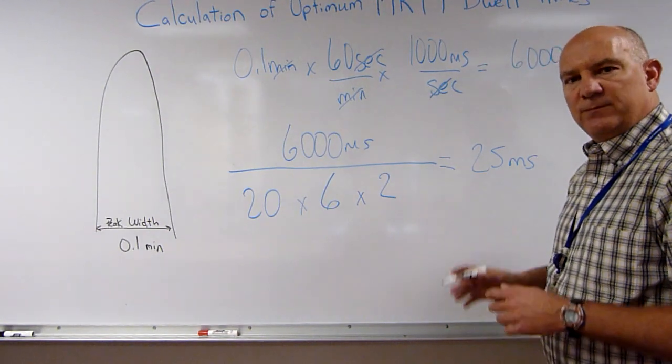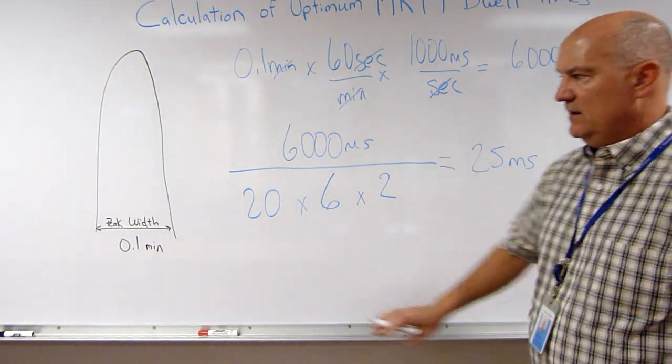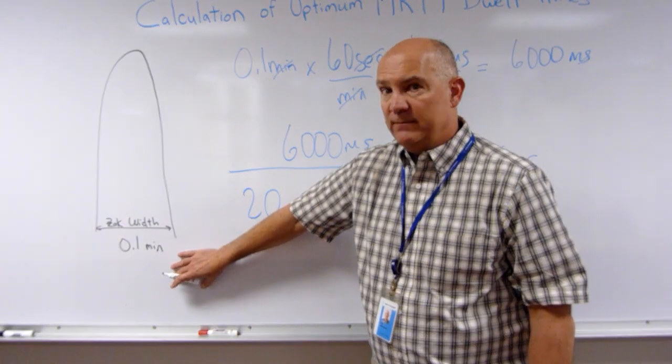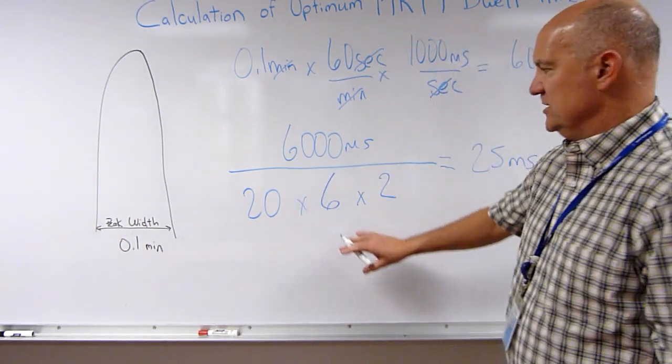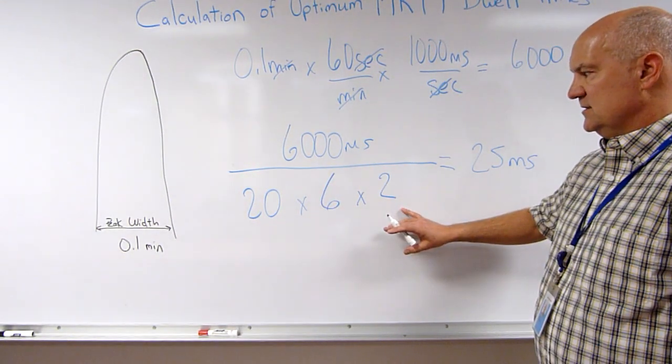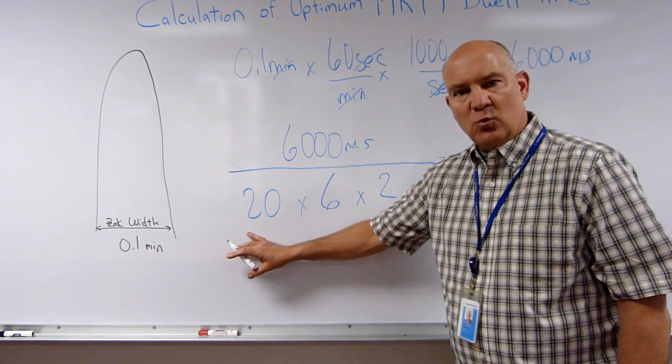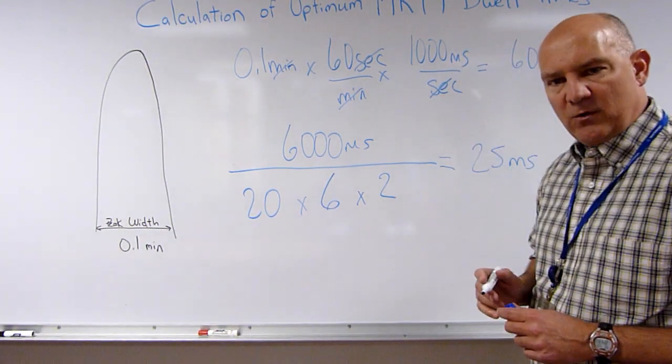25 milliseconds would be the optimum dwell time for this 0.1 minute peak if we were measuring 6 compounds and 2 transitions of each and desired 20 data points for every MRM transition.